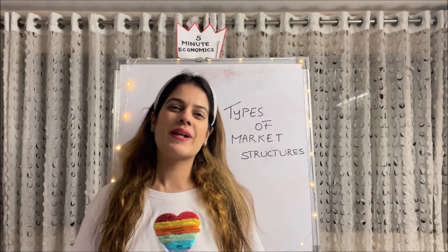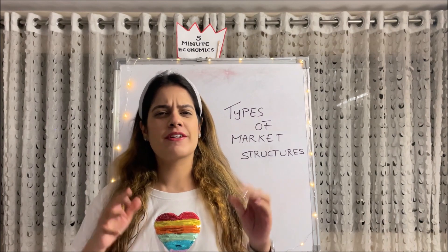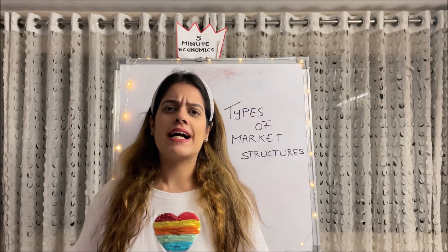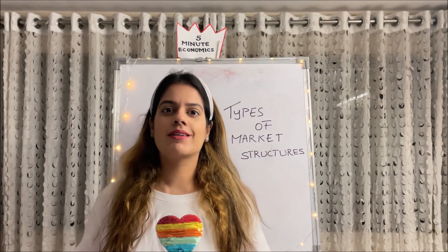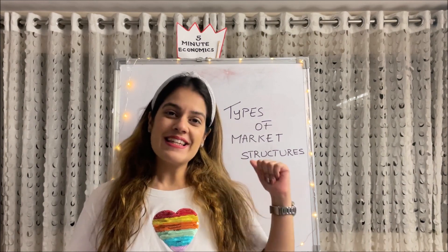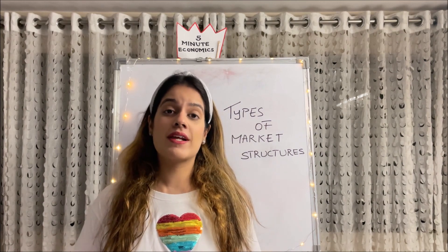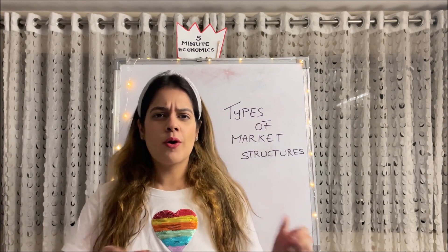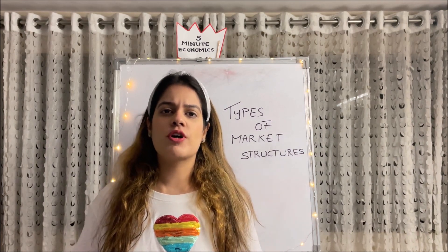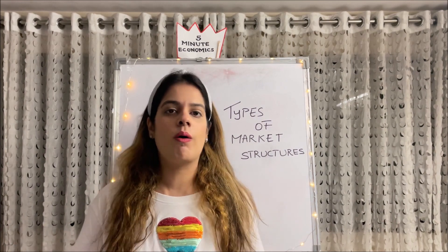Hi guys, my name is Vidhi Kalra and welcome back to my channel 5 Minute Economics, where I teach economic concepts in just five minutes. The topic for today is types of market structures. I've been covering a lot of macroeconomic content lately, so I thought why not bring in some microeconomic content. This topic is part of 11th and 12th economics as well as undergrad level economics. Today I'll be talking about all the types of market structures — monopolistic competition, perfect competition, monopoly, and basically all the types.